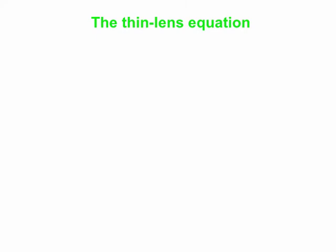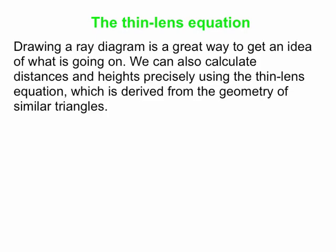Let's go to the thin lens equation. We love to draw ray diagrams — that gives us a good idea of what's going on with the image: where it is, what the characteristics are. But we can also be very quantitative and calculate distances using the thin lens equation, and heights using the magnification equation. We can derive these equations from the geometry of similar triangles, and that's really why you get the same equations.